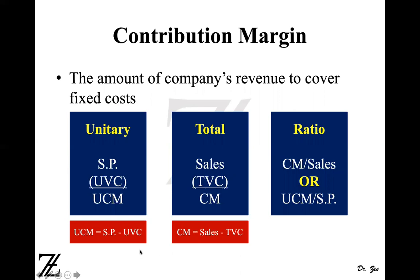In algebraic equation form: UCM (unit contribution margin) equals selling price minus variable cost per unit. In total form: contribution margin equals sales minus total variable cost.